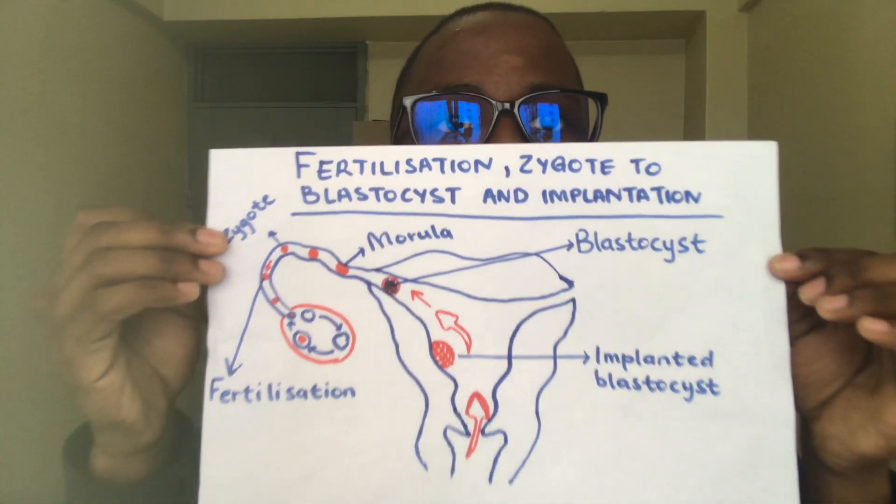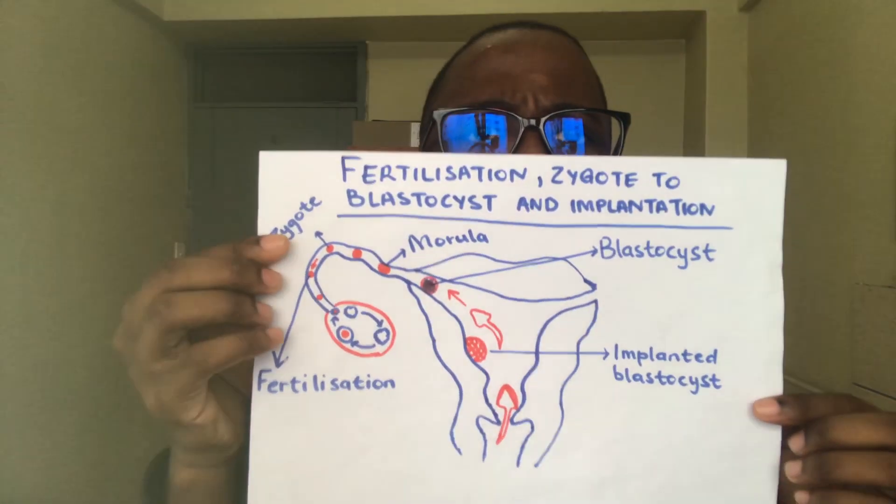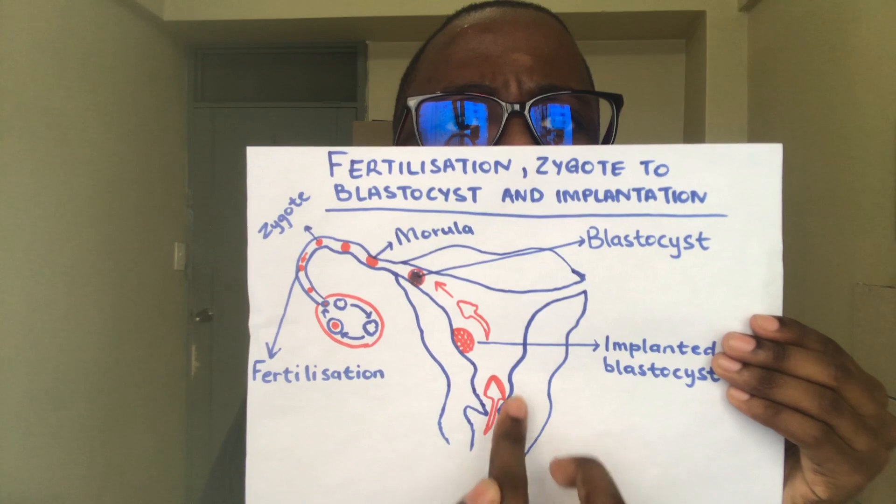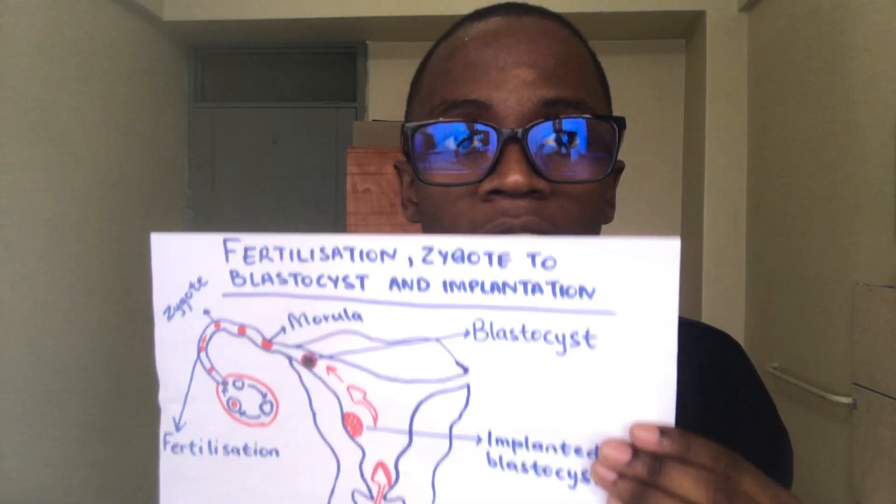Now let's talk about fertilization, the zygote, blastocyst, and implantation. In order for a female to get pregnant, the ovulation process must take place — the release of the egg must occur. When a male sends their spermatozoa into the female, they can fuse with the ovum that has been released and form fertilization. I've tried to make a drawing to make it clear.